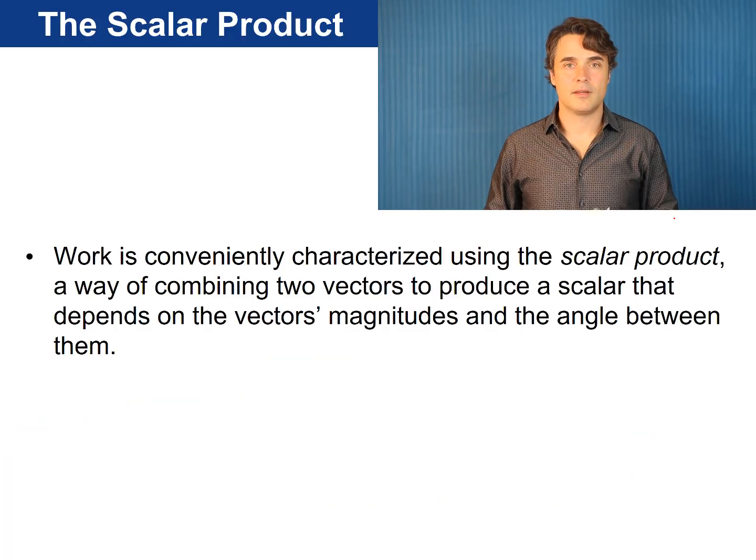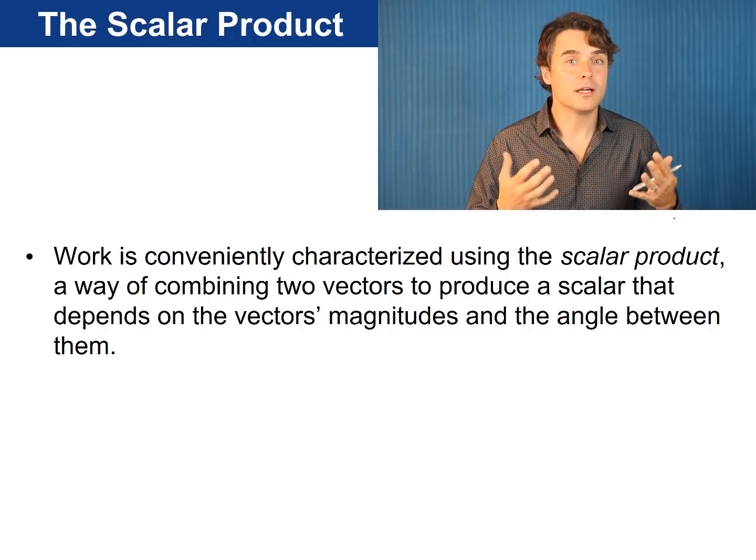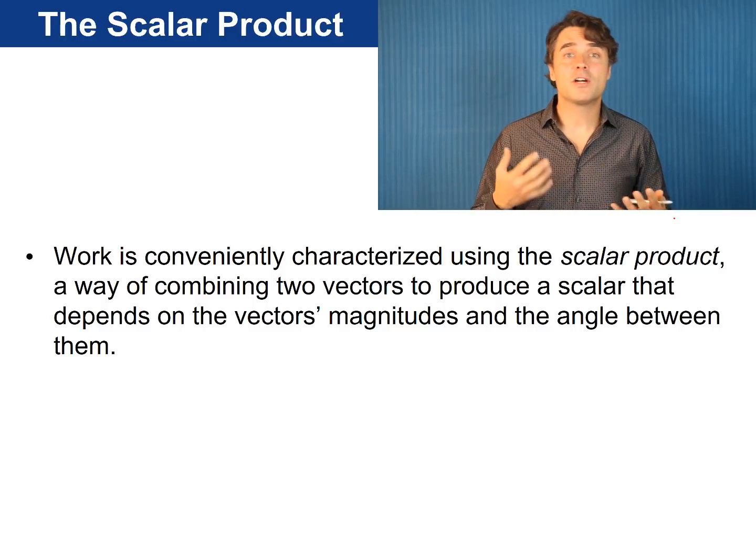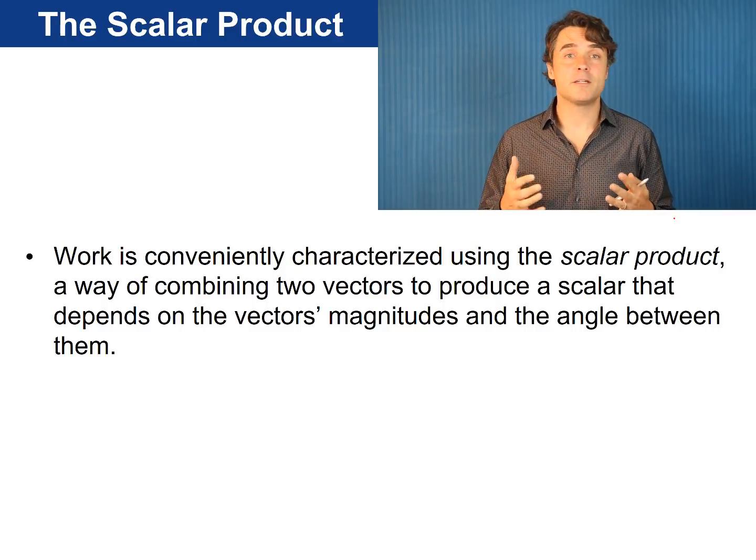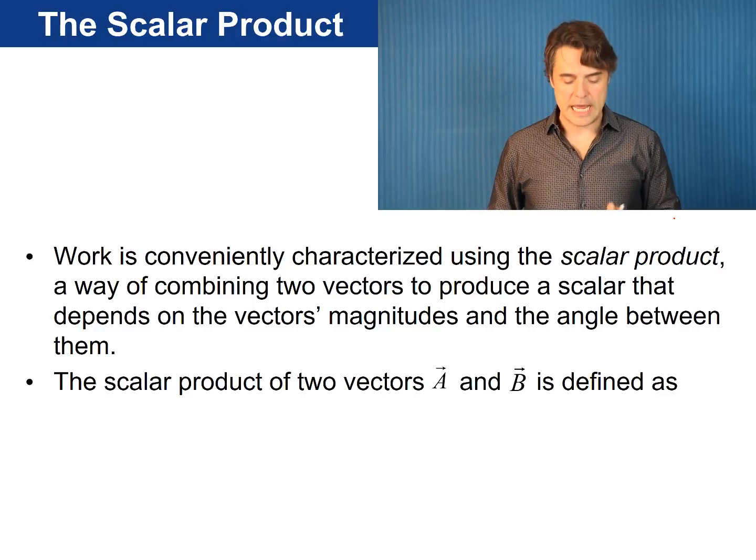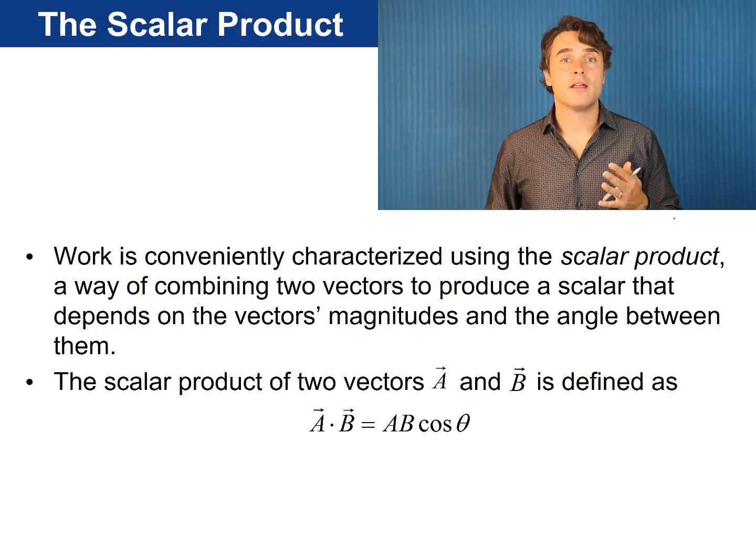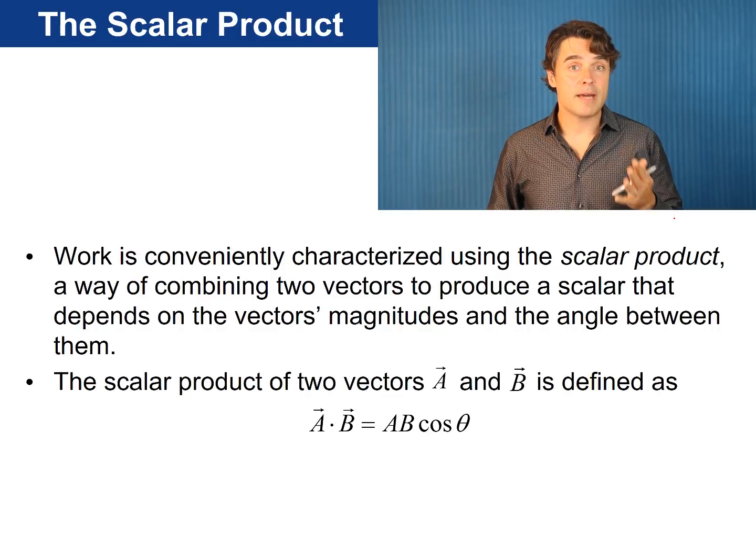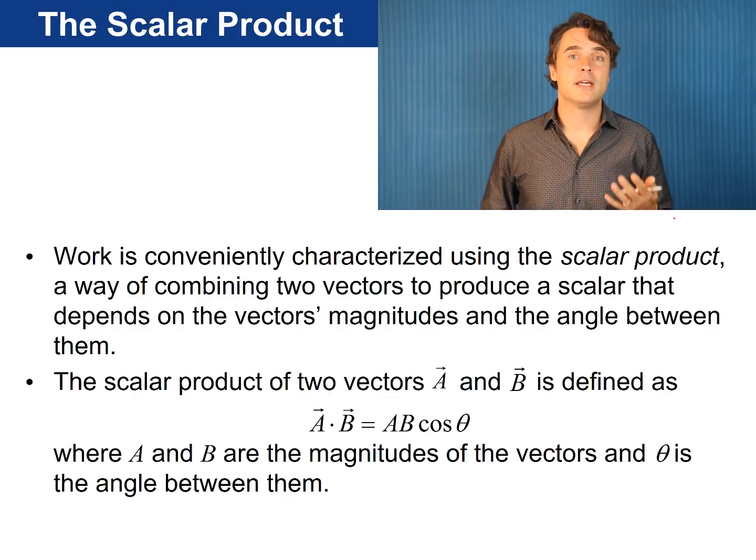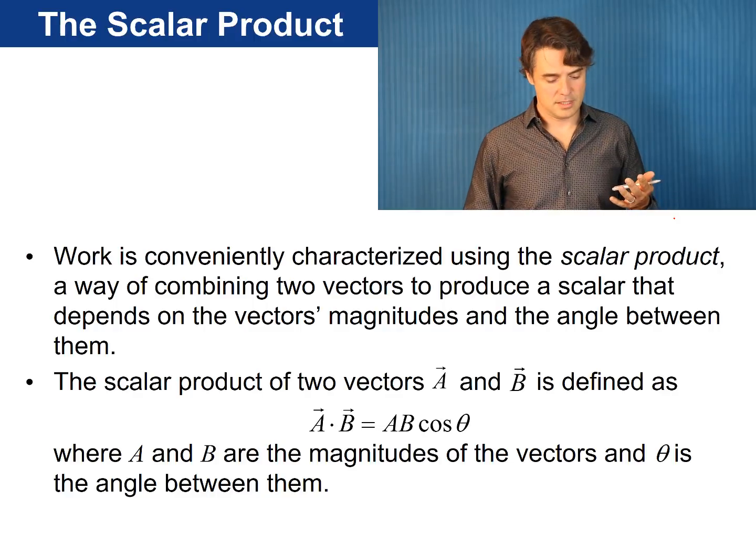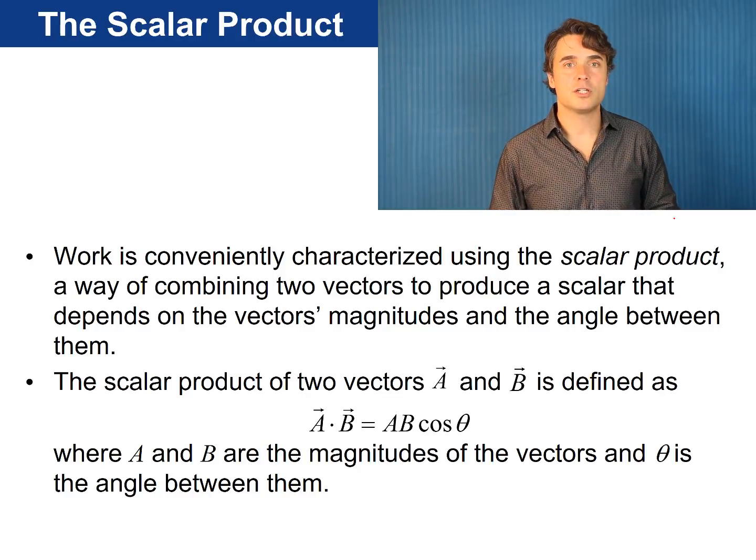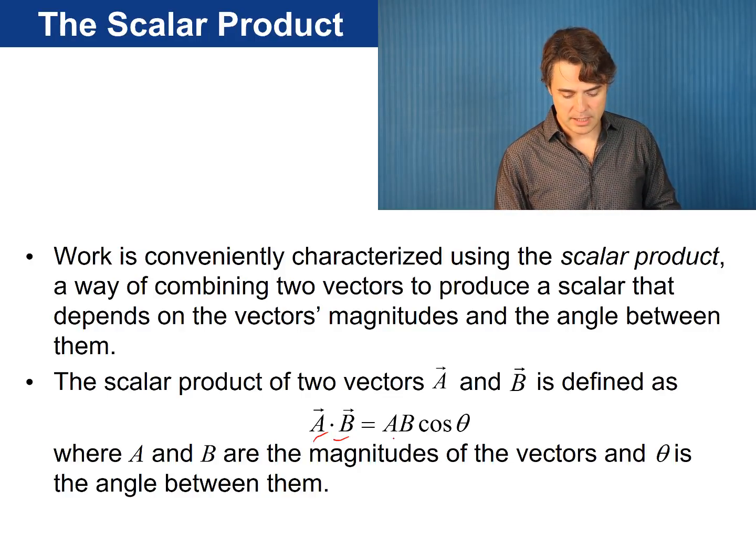Mathematically work can be conveniently characterized using the scalar product, a way of combining two vectors to produce a scalar that depends on the vector's magnitudes and the angle between them. The scalar product of two vectors a and b is defined as the magnitude of a times the magnitude of b times cosine theta where theta is the angle between the two vectors. Sometimes the scalar product is called the dot product and I would read this equation as a dot b equals a b cos theta.